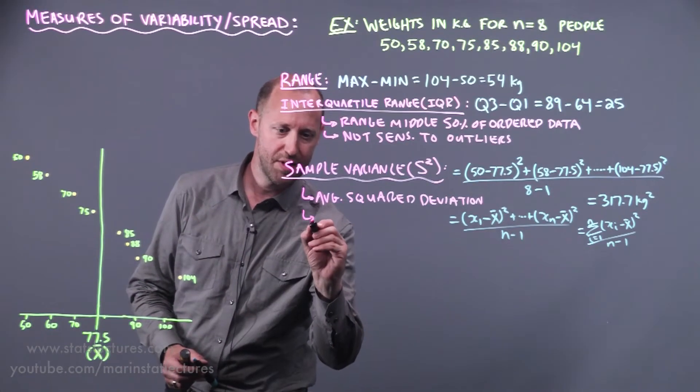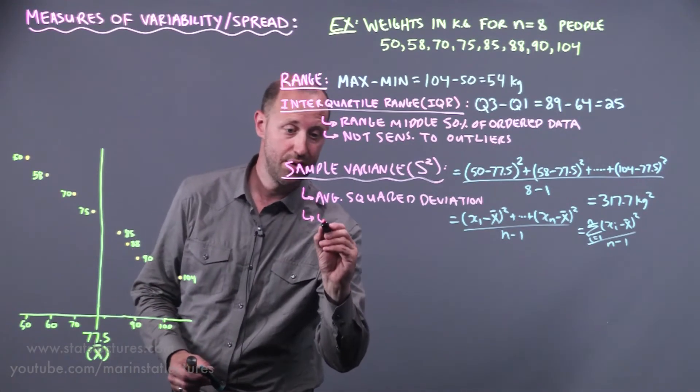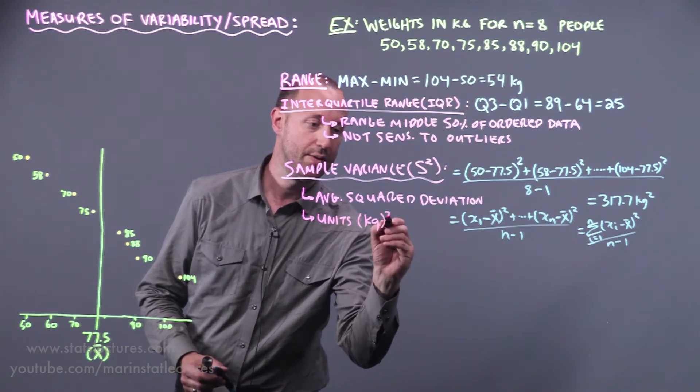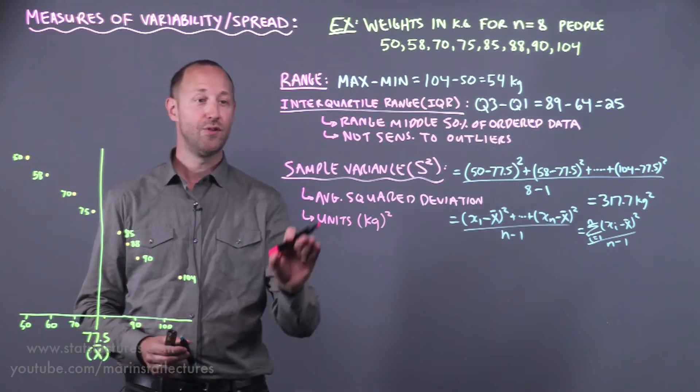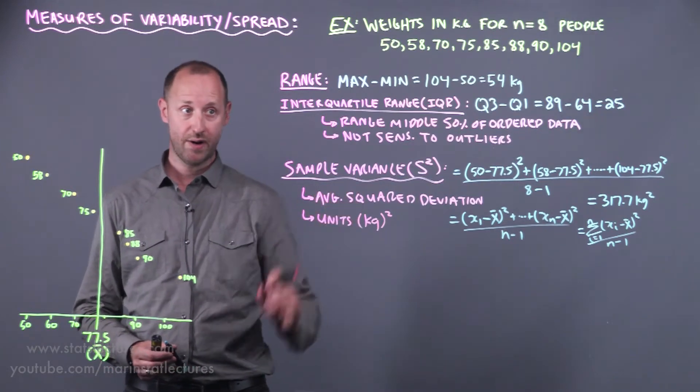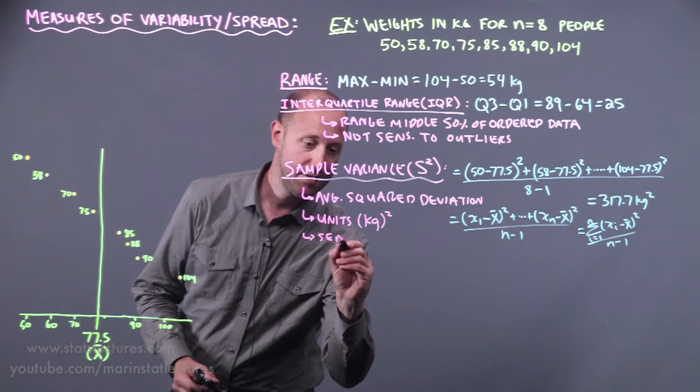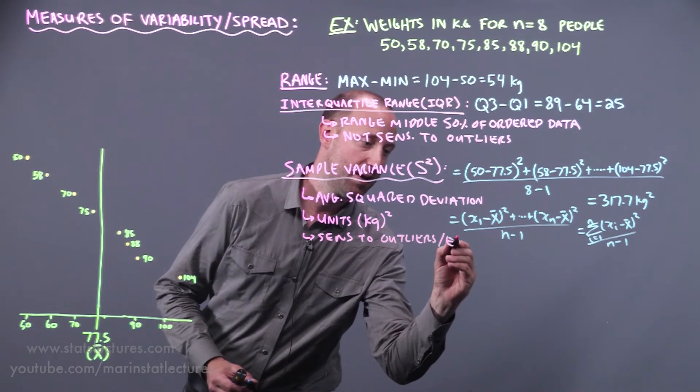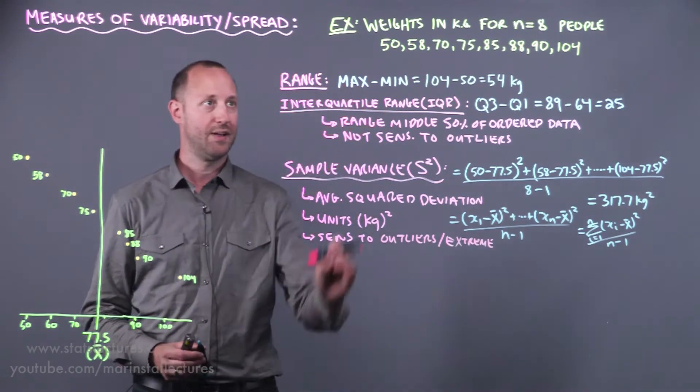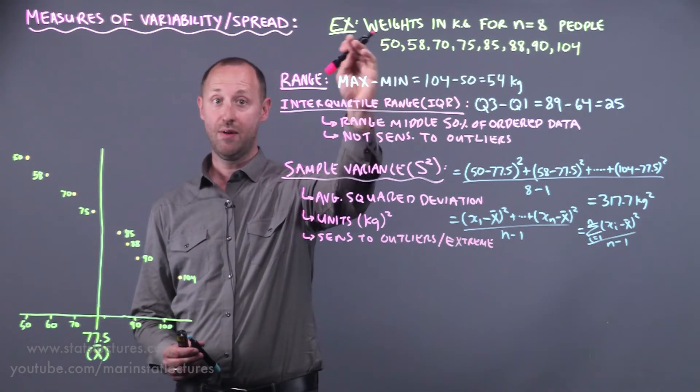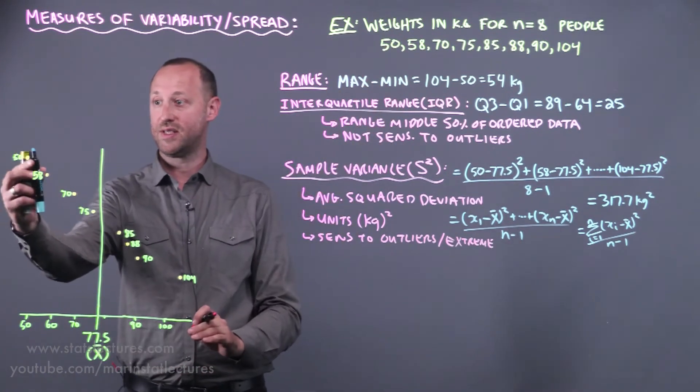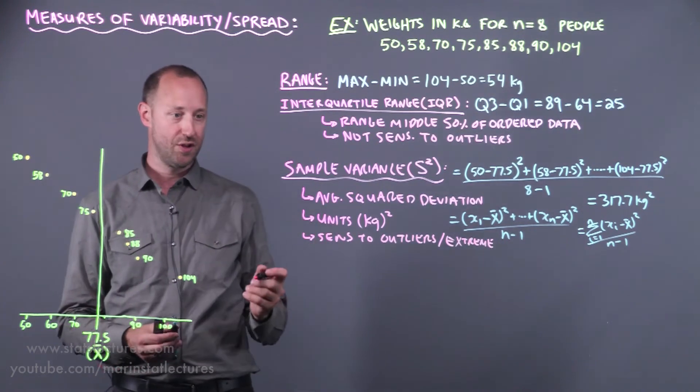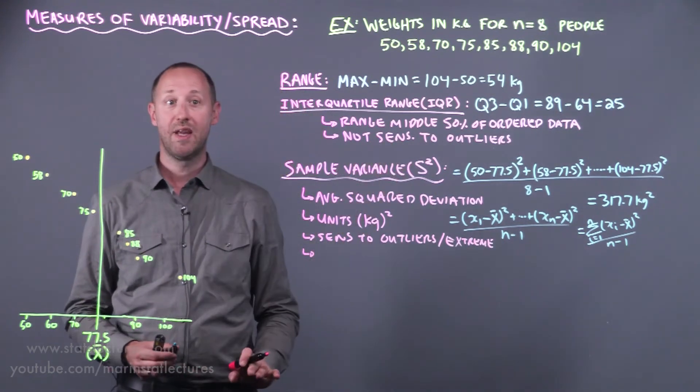Some other things to mention about the variance. The units here are in kilograms squared. In general they're the units of our variable x squared. It's sensitive to outliers or extreme values. If one of these values say the 50 were to become 20, that distance is going to become much further. The average squared distance is going to grow much larger.